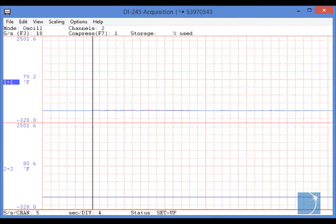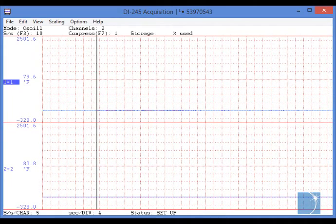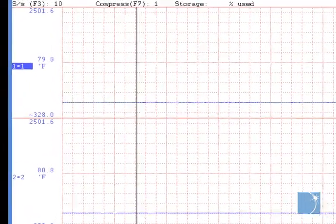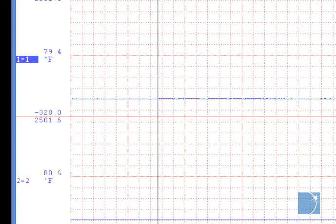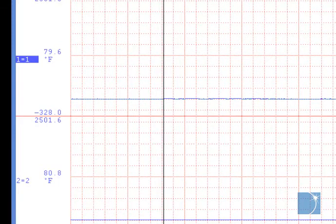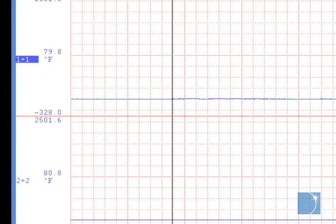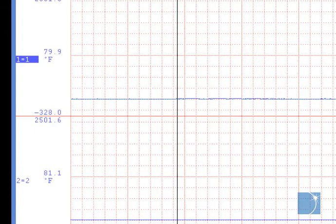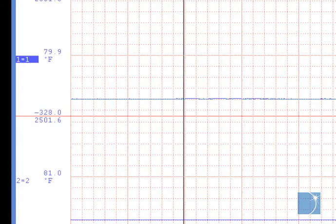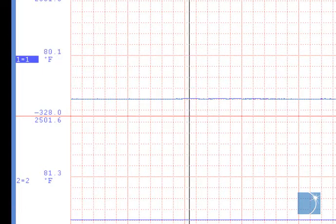Here we see the DI-245 displaying temperature on channels 1 and 2. As you can see, channel 1 reads 79.7 or so, and channel 2 reads about 80.6. Now we'll close the switch, applying 340 volts peak to peak to the thermocouple on channel 1.